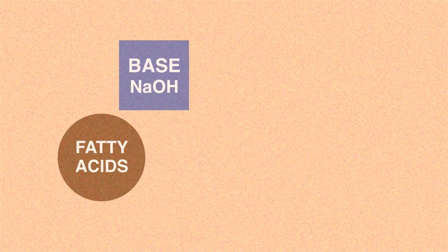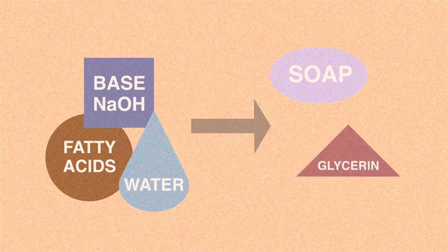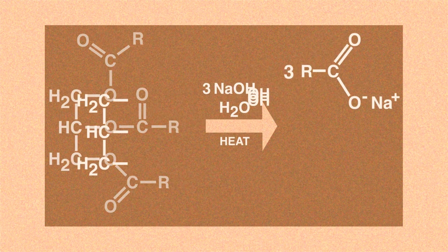Soaps have always been made in a similar way, using hydrolysis. The technical word for this process is saponification. Chemically, fatty acids or oils combine with a base, typically sodium hydroxide and water. The result of this process is soap and a chemical called glycerine. This is seen in the chemical reaction where the fatty ester highlighted is broken down to form a carboxylate salt and glycerine.